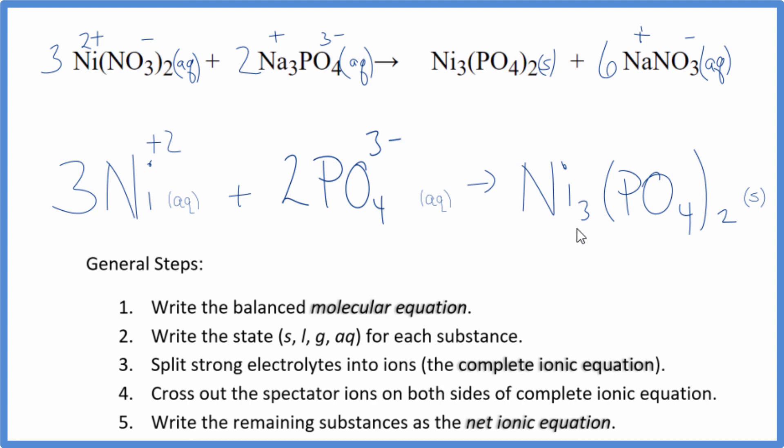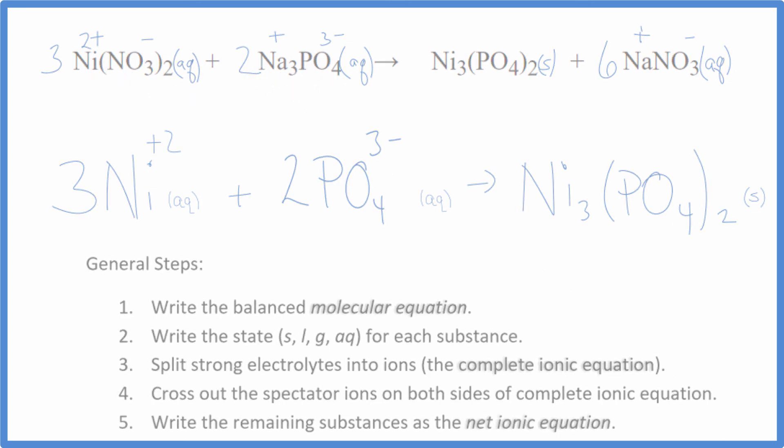And the atoms are balanced as well. Earlier, I made a mistake with the sodium ions. I would have caught that here because my charge wouldn't have balanced or the atoms wouldn't have balanced. Always good to check at the end for charge and for the number of atoms. This is Dr. B with the balanced net ionic equation for Ni(NO3)2 plus Na3PO4. Thanks for watching.